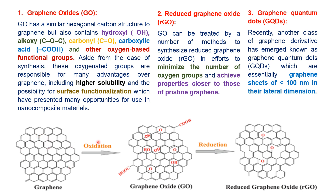When graphene undergoes oxidation it produces graphene oxide, meaning that carboxyl, hydroxy, and carbonyl groups get incorporated onto the surface of graphene. It is easily synthesized and has many advantages, including higher solubility — because these groups are polar in nature and dissolve in water due to the like-dissolves-like principle. The most suitable property of graphene oxide is that it undergoes surface functionalization.